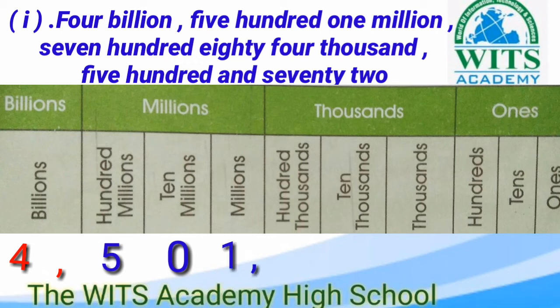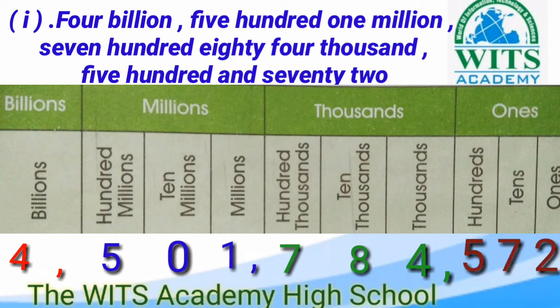फिर comma लगाएंगे। उसके बाद seven hundred eighty four thousand है — seven hundred thousand है तो hundred thousands के portion में 7 लिखेंगे। 84,000 में 80 ten thousands में लिखेंगे और 4 को thousands के portion में लिखेंगे। उसके बाद 572 है — 500 को hundreds के portion में, 72 को tens और ones के portion में write करेंगे।